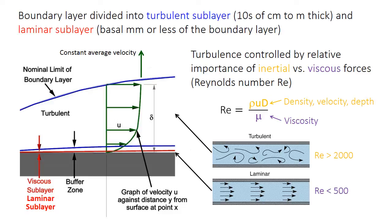Most boundary layers in natural flows are on the order of tens of centimeters or maybe a few meters thick, and they're mostly turbulent. Turbulent flow is one where the flow paths are highly irregular — lots of eddies, with water flowing in complicated swirling patterns. This describes nearly all natural water flows such as rivers or the ocean. Turbulence is technically described by the Reynolds number, which is the ratio of inertial to viscous forces in the fluid, and turbulent flows have larger Reynolds numbers.